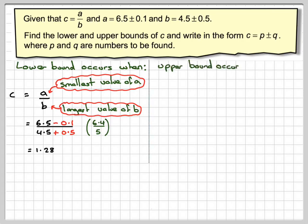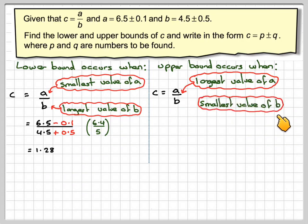The upper bound occurs when c is a divided by b, this is the largest value of a divided by the smallest value of b, so it's the opposite to what the lower bound is.